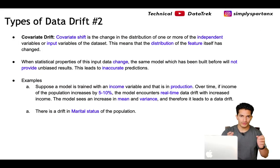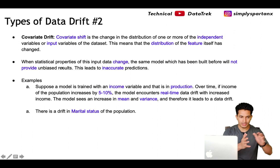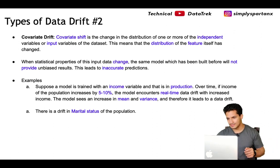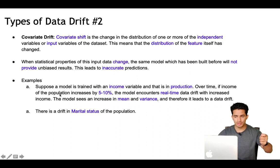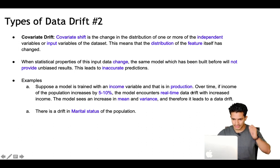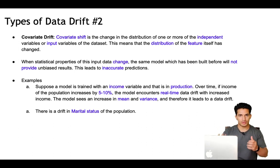The second type of drift is covariate drift. Covariate shift is the change in the distribution of one or more independent or input variables of the dataset — the mean of the distribution of the feature itself changes. When the statistical property of the input going into the model has changed, the same model built before will not provide unbiased results and will lead to inequitable predictions. For example, if a model uses income as an input and the income of the population increases by 5 to 10 percent, the model encounters real-time data drift, seeing an increase in mean and variance.